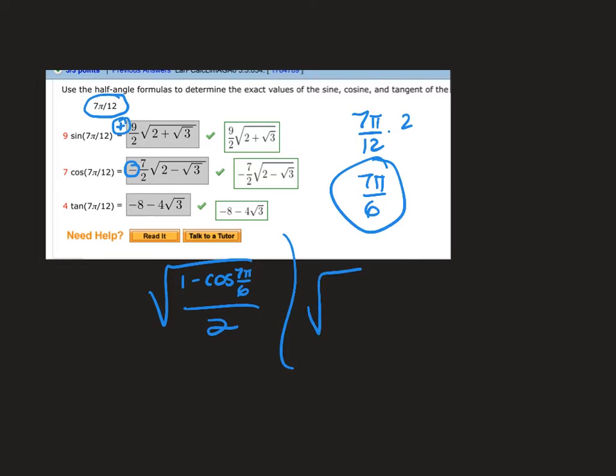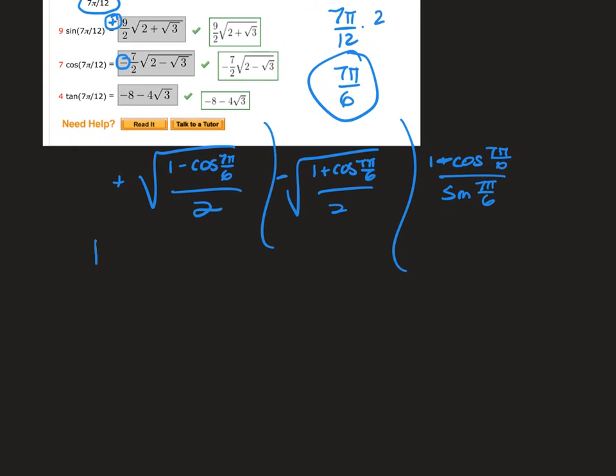And then this last one is use the half angle to determine the exact values. So the first thing you have to do is figure out where this lies. 7 pi over 12 is in the second quadrant, which means cosine is negative, sine is positive. And then I would double it. So 7 pi over 12 times 2 is 7 pi over 6. And that is a unit circle-based question.